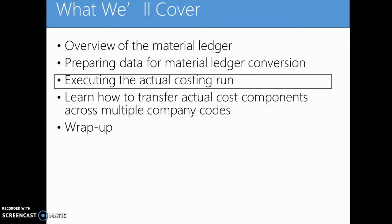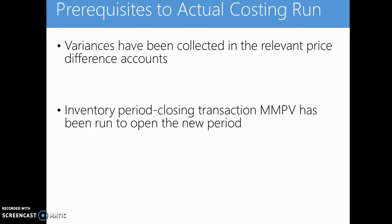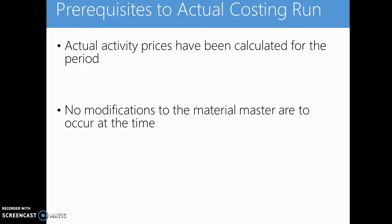In this session we will go through the execution of the actual costing run. First, what are the prerequisites to the actual costing run? Variances have to be collected in the relevant price difference accounts. Then the inventory period closing transaction has to be run to open the new period. Also, actual activity prices have to be calculated for the period. At the time of the actual costing run, make sure no modifications to the material master are occurring at the same time.